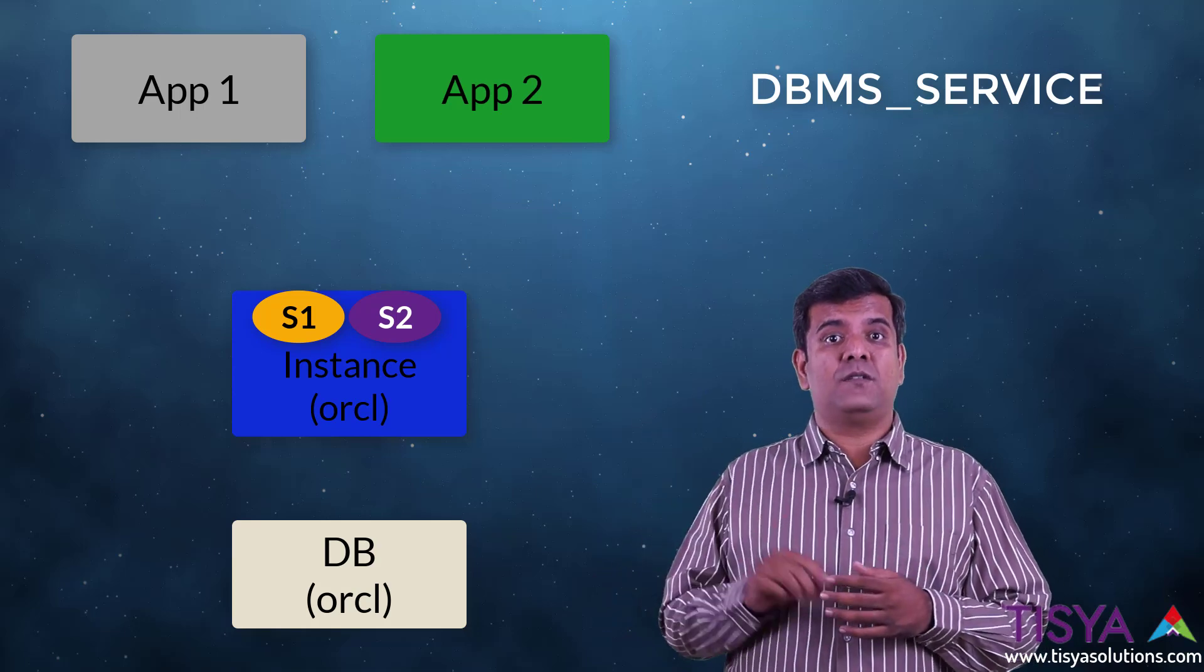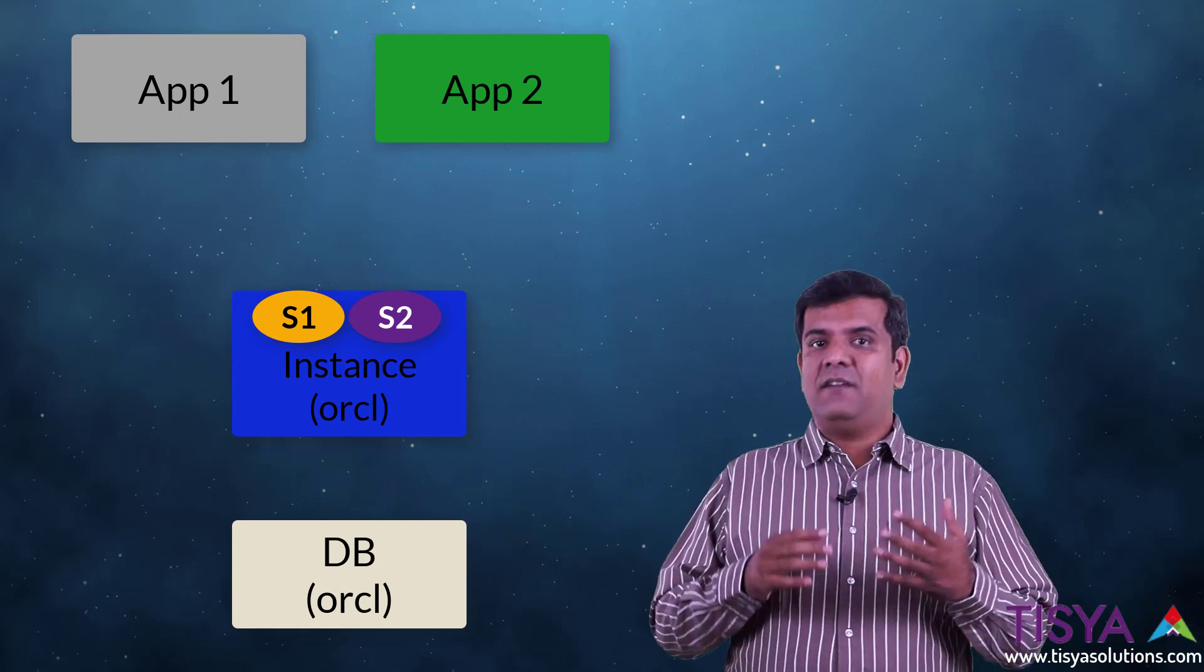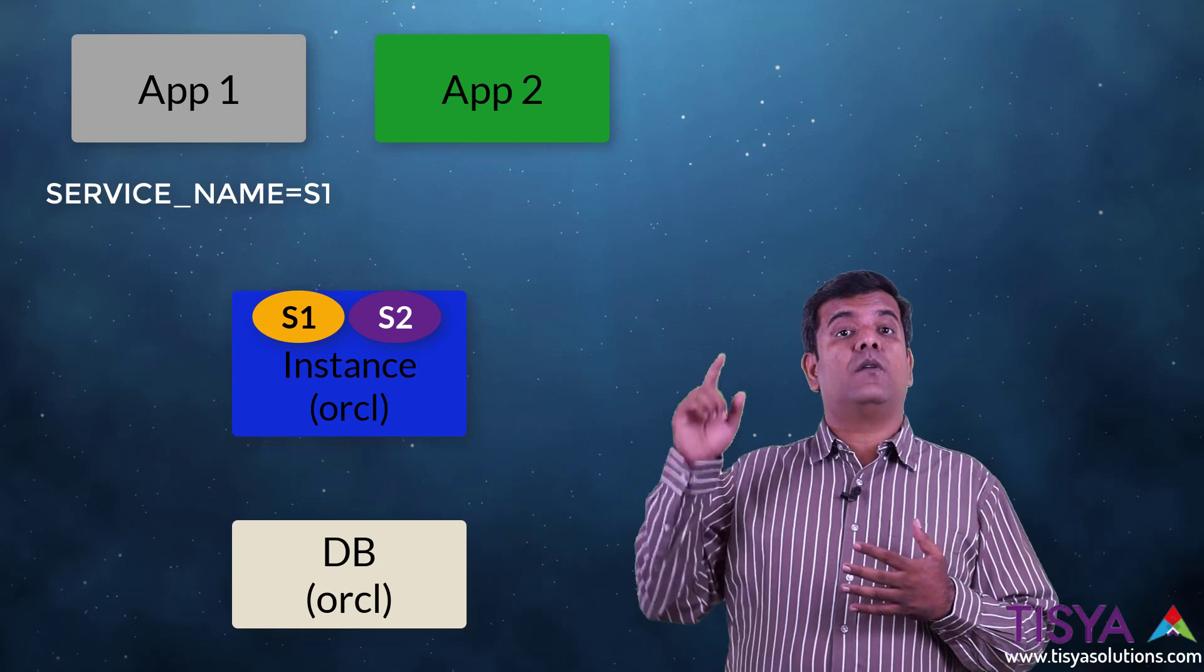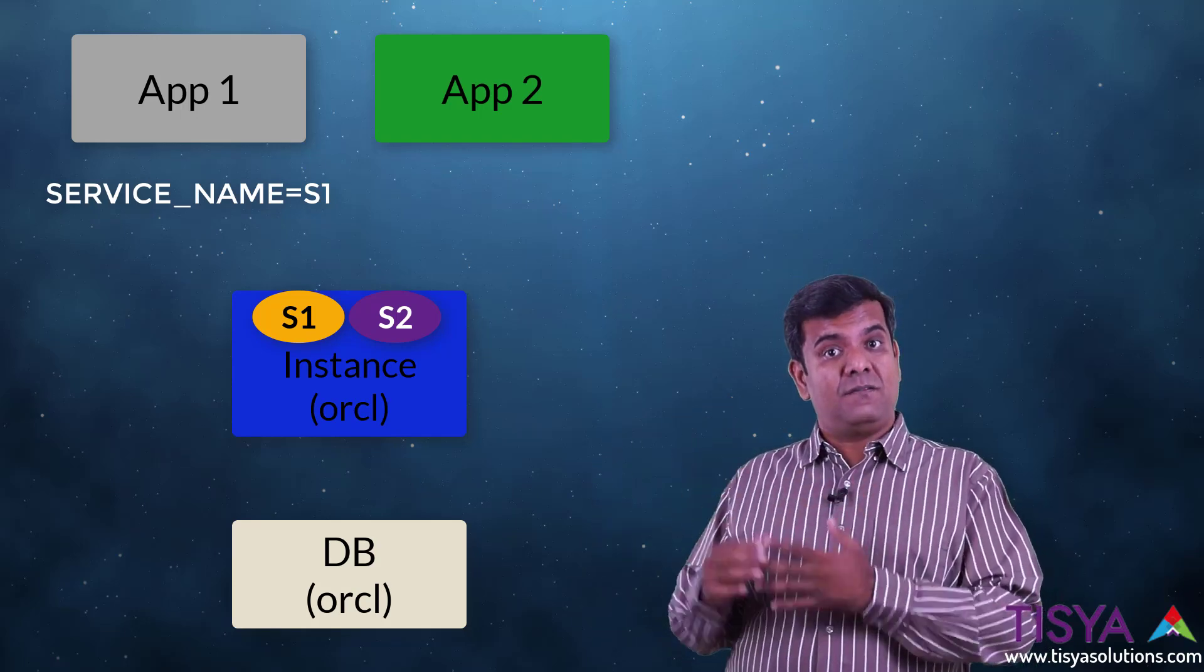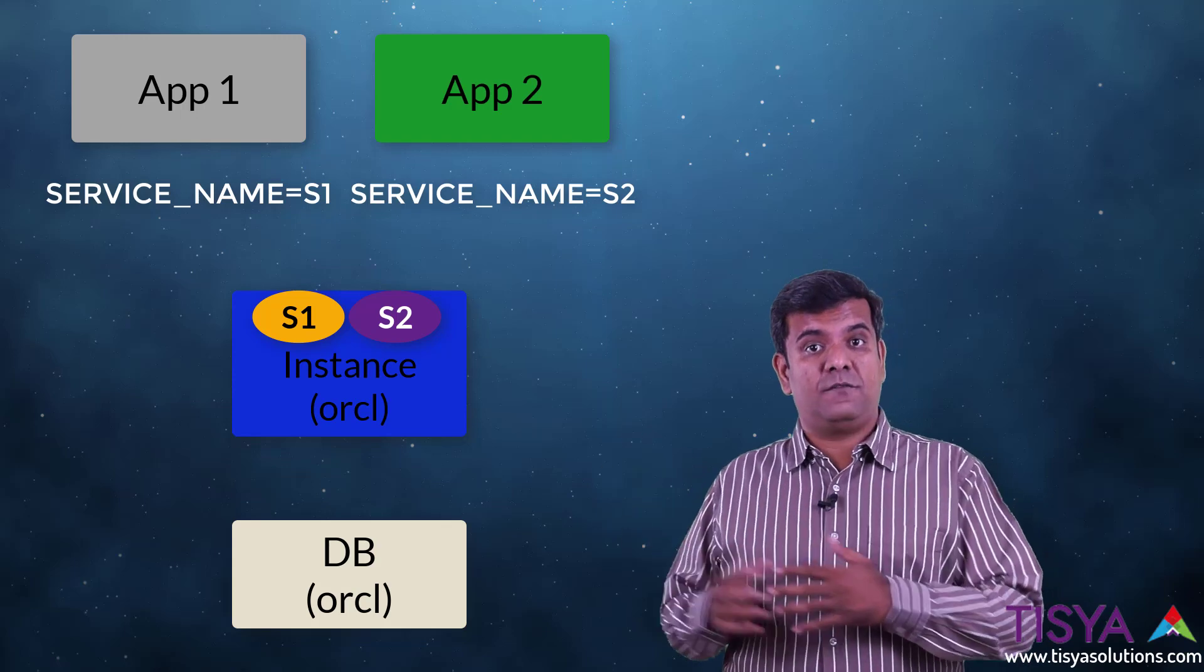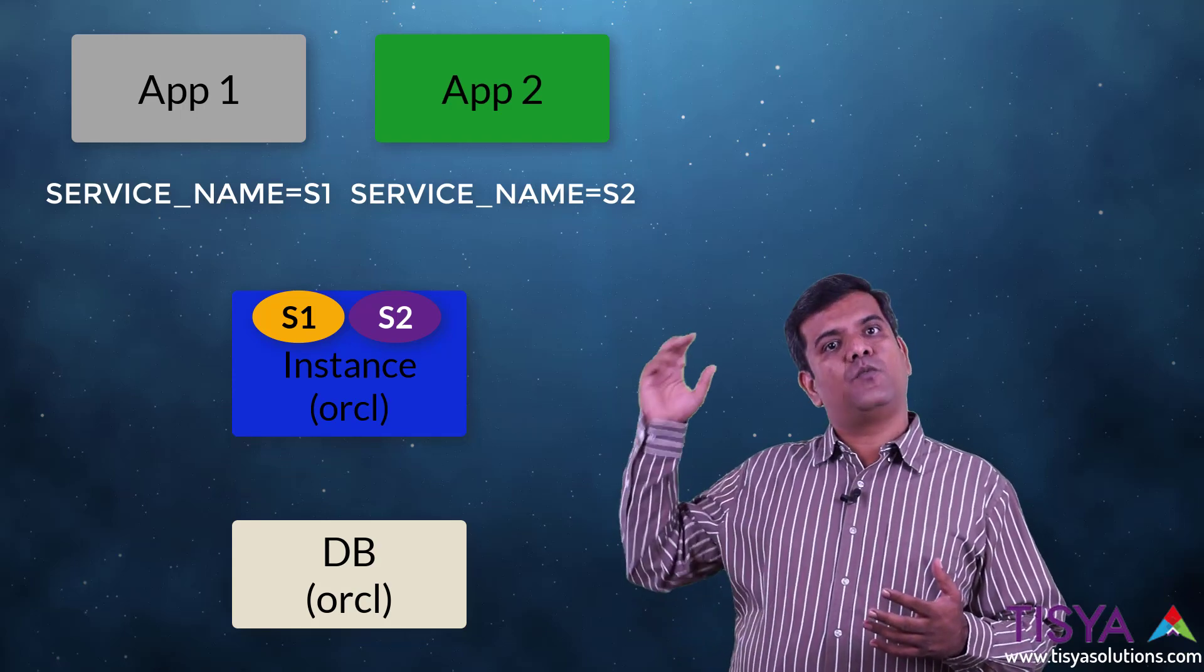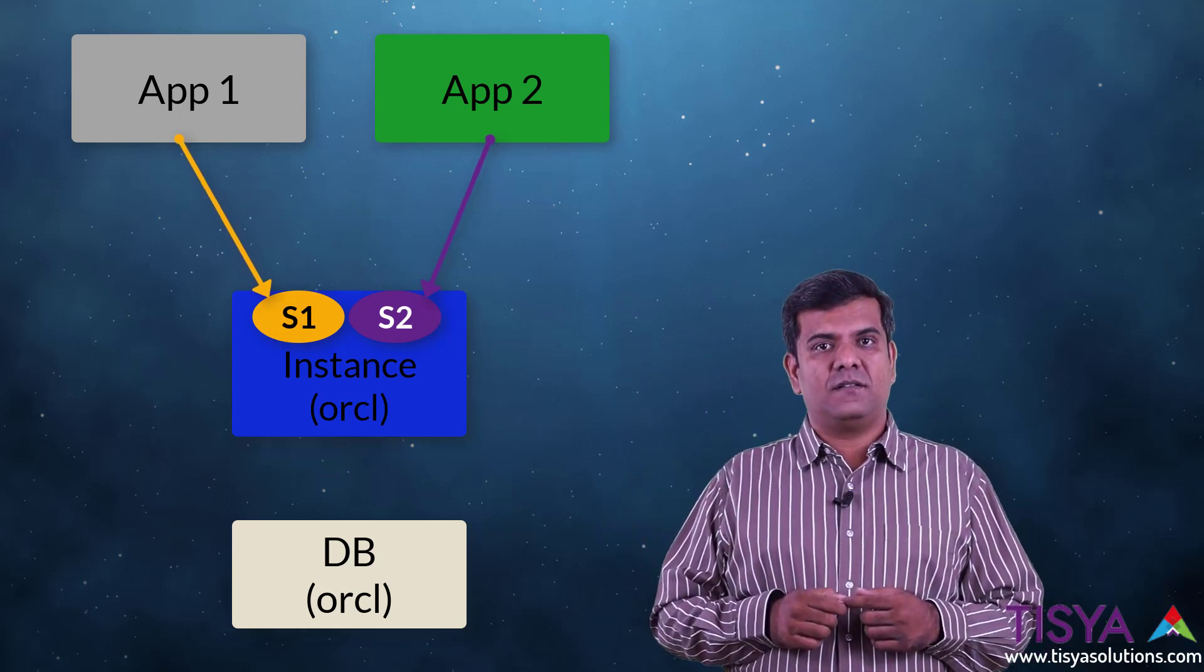The moment we have two services, let's say we will make application one in its connect string give the hostname, port number and service name equal to serve one. And in application two, we will give service name equal to serve two. By doing this, both the applications will connect to the same instance, but they will connect through a different service.